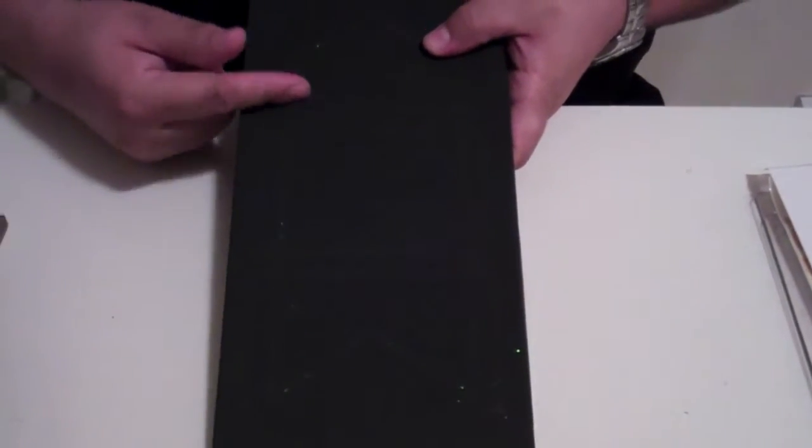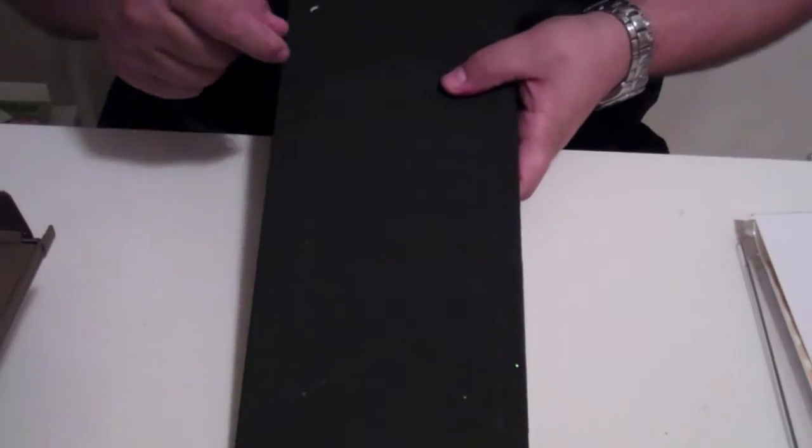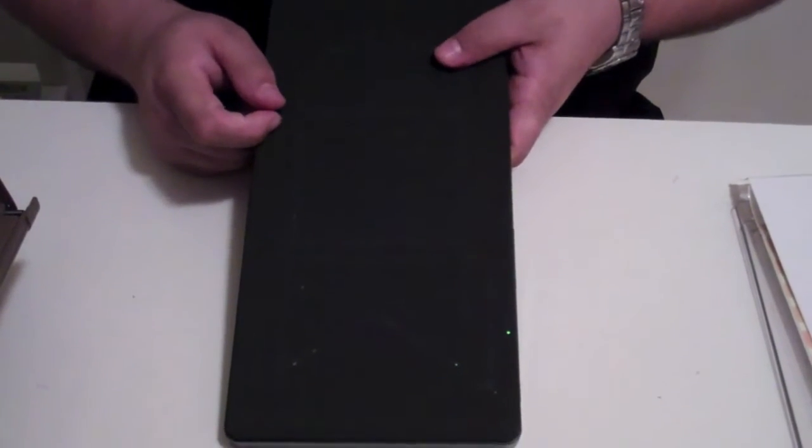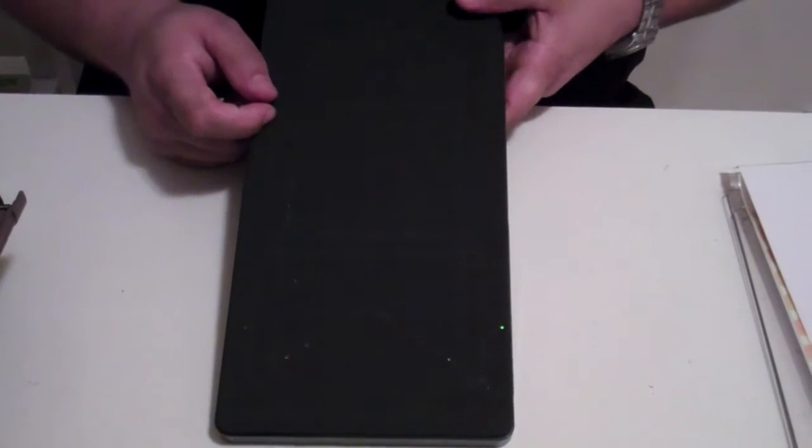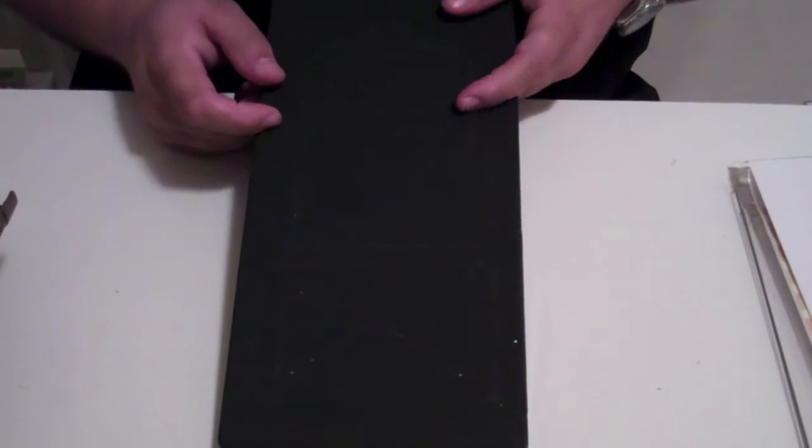But there is actually a steel ruler in there. Now the concept behind this is, like I said, this is to cut mat board. With the steel rule dies, they are usually made to cut various types of material.